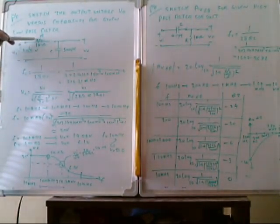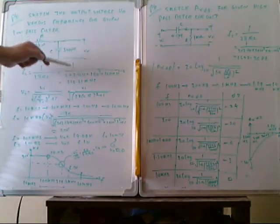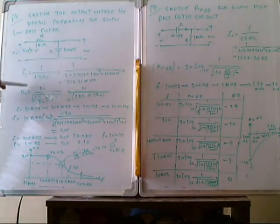Firstly, we have to calculate the FC by 1 divided by 2πRC. The resistor is 1 kilo ohm, C is 500 pico Farad. So you substitute and you can calculate the FC.